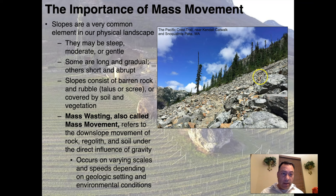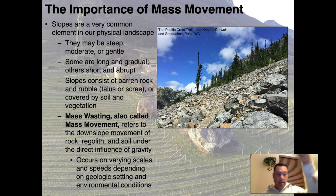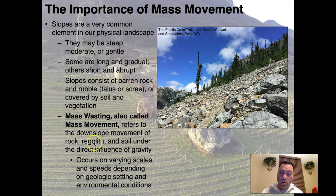All of this happens because gravity pulls rocks down toward the center of the Earth. The mountains rose up, and then they fail through these landslides, depositing rocks down their slopes. It occurs on varying scales — very large or very small — and at varying speeds, from very fast to very slow, depending on the geological setting and environmental conditions.